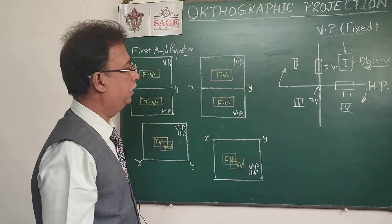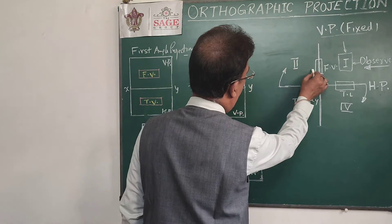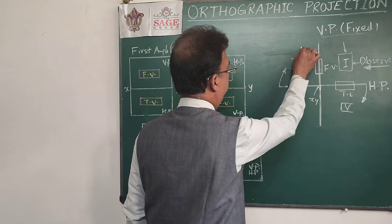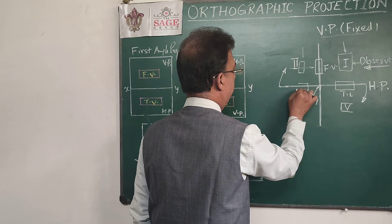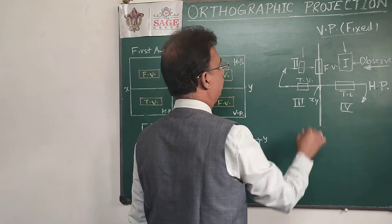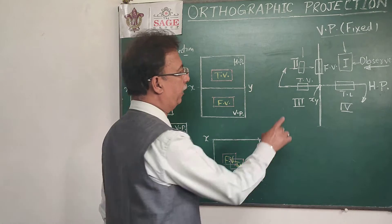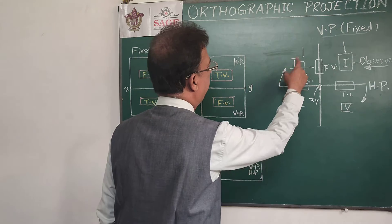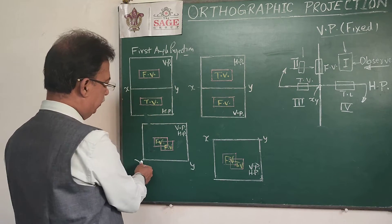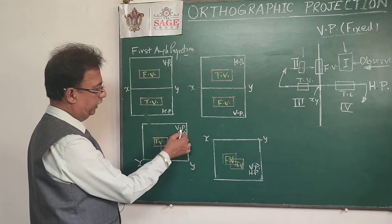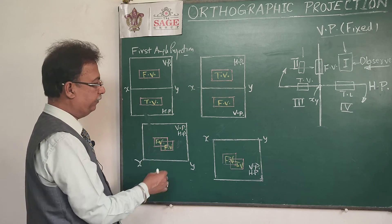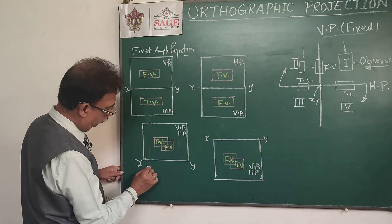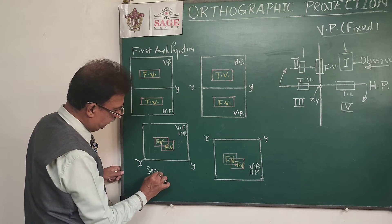When the object is in the second quadrant, the front view will be on the VP and the top view will be on the HP. This time the HP rotates upward because the effective HP is the back portion, so both planes end up above the reference line, coinciding with each other. As a result, the top view and the front view also coincide. This is second angle projection.